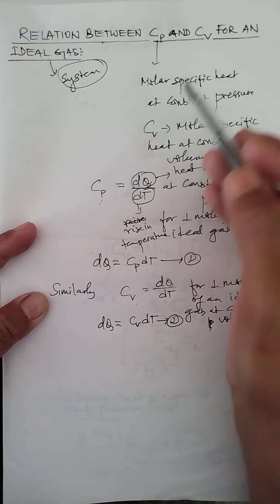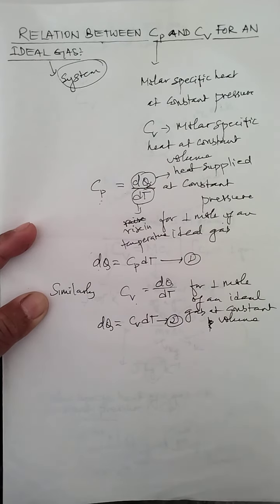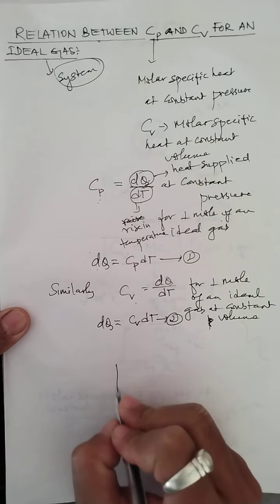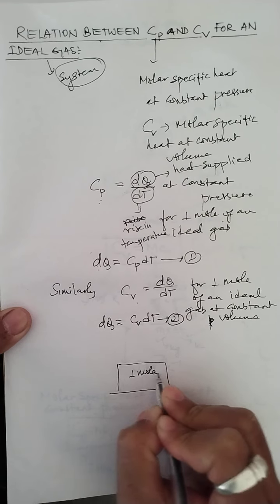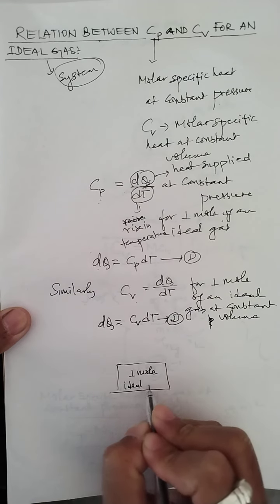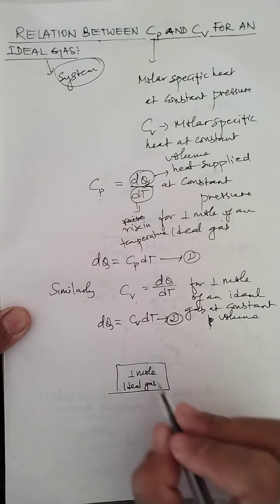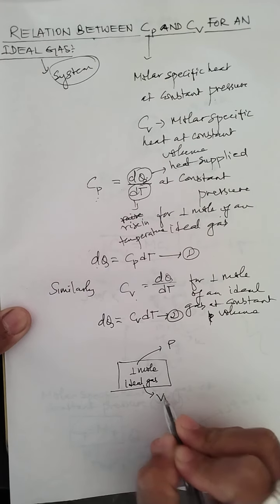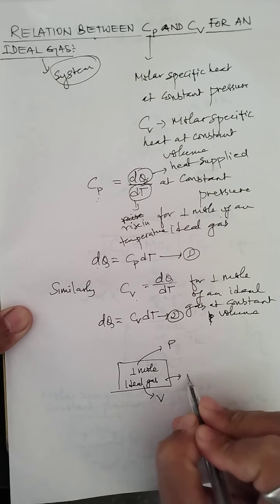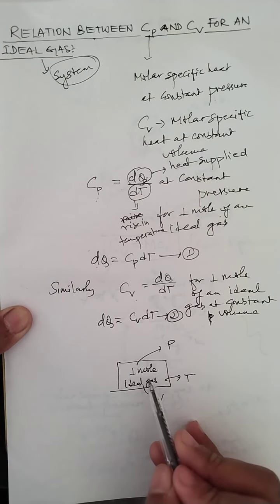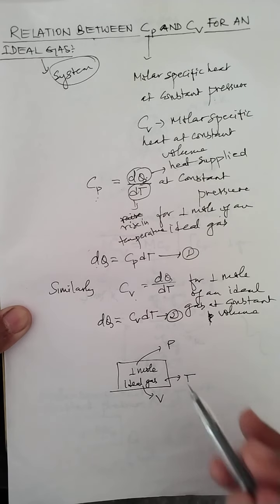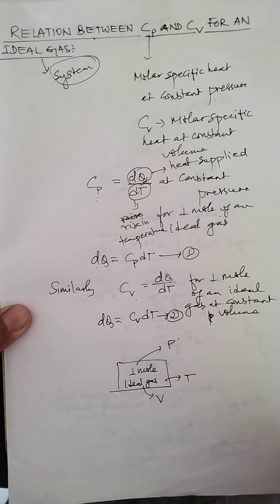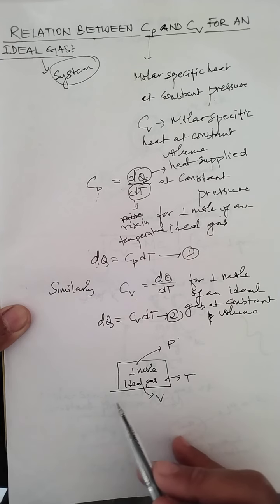This relation which we are going to derive is by taking one mole of an ideal gas. So let me take one mole of an ideal gas. Suppose you have one mole of any ideal gas. This gas is already at a pressure P, volume V, and absolute temperature T.